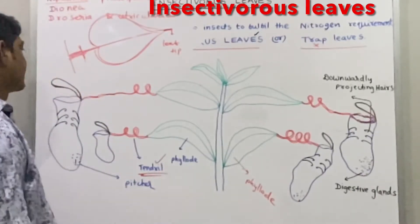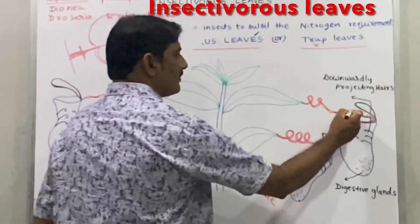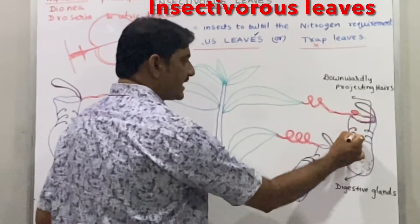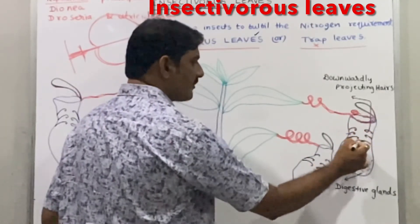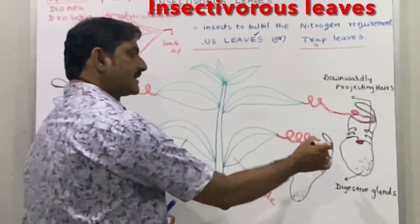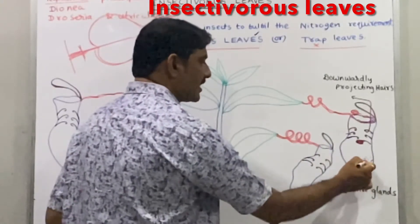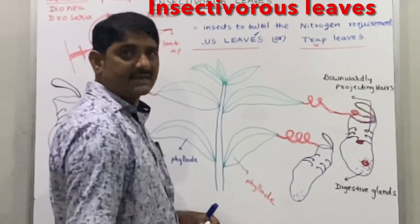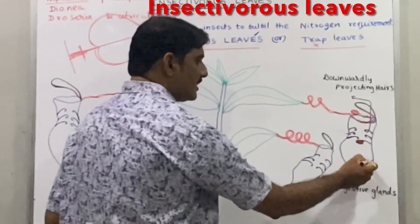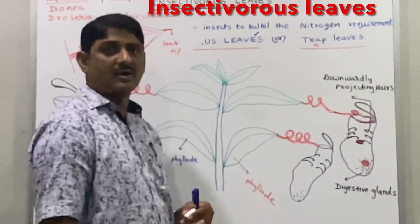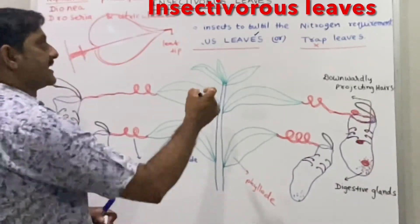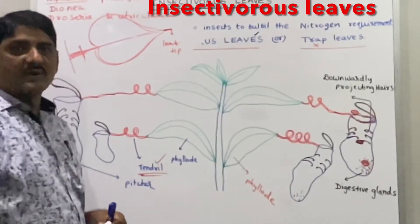Insects are attracted to the colorful lid. Downwardly projecting hairs are present inside. Once an insect enters, the lid closes and the digestive enzymes break down the insect's proteins. The protein is digested by the digestive enzymes, providing nitrogen to the plant. This is the specialized leaf called the insectivorous leaf, with three modifications: phyllode, tendril, and pitcher.